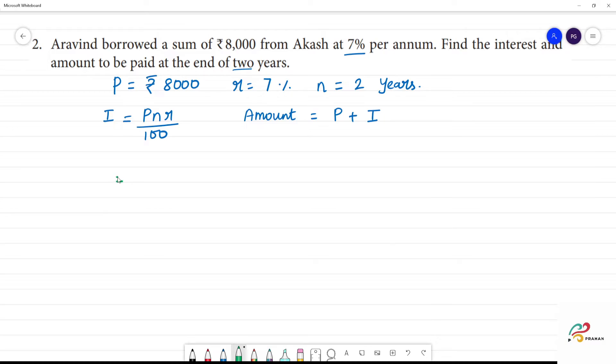Now, the principal amount is Rs.8,000. The number of years is 2. The rate of interest is 7. Divided by 100.